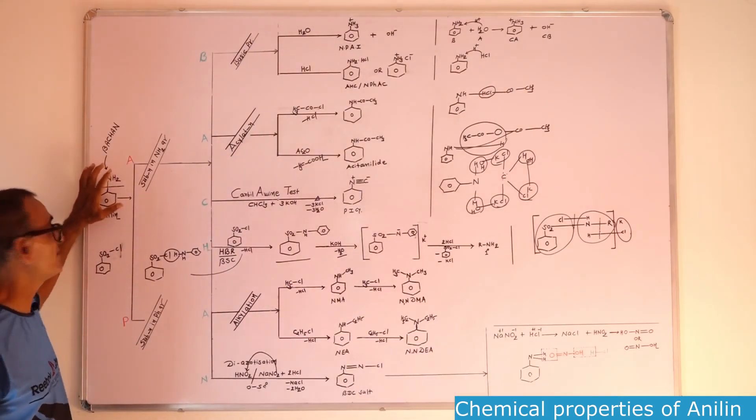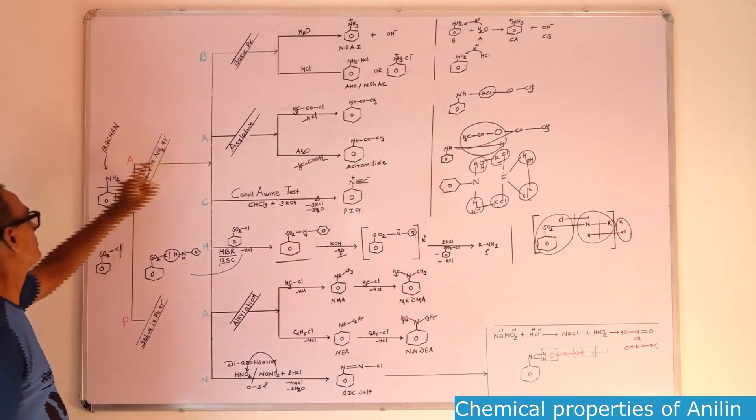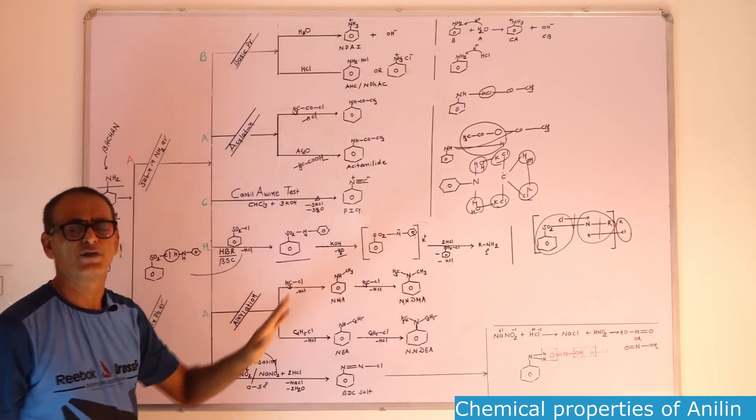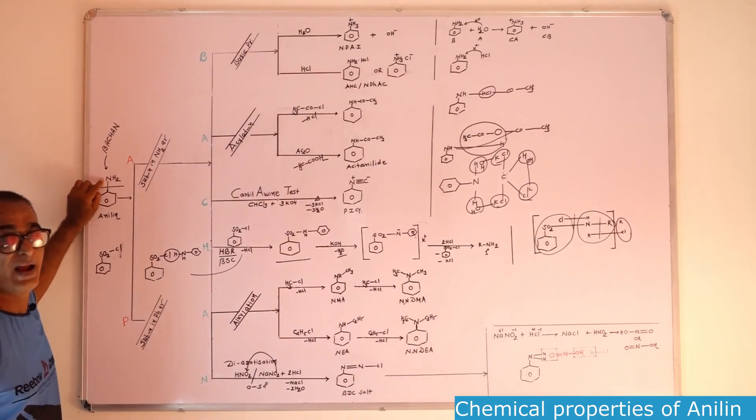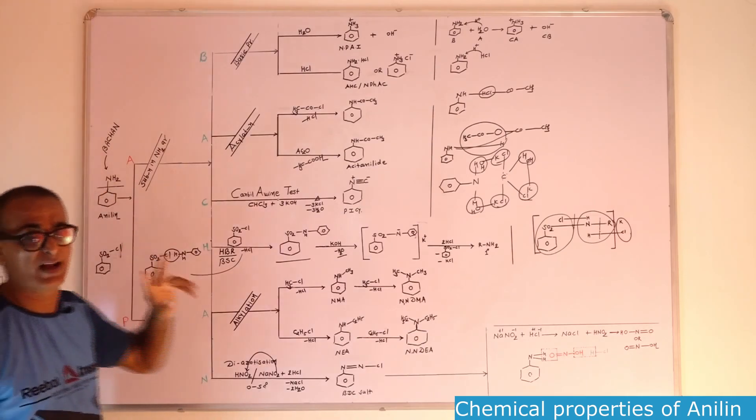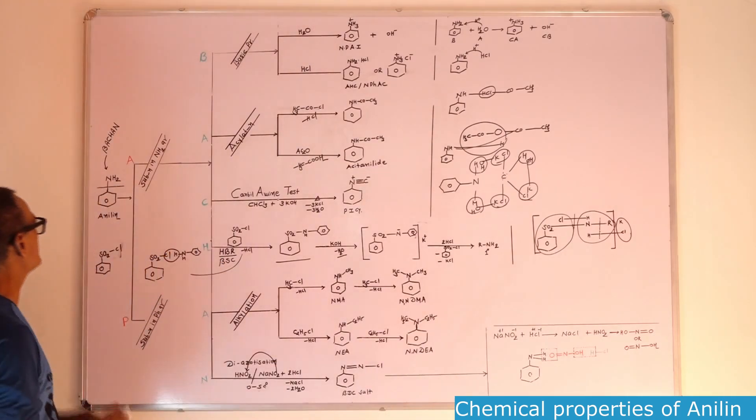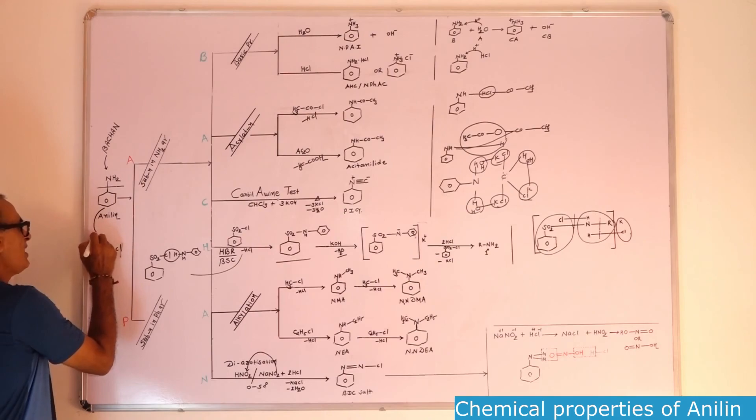In aniline reactions, aniline gives two types of reactions. First reaction during which substitution in NH2 group. In NH2 group change, this phenyl group will remain as this during these reactions. Phenyl group is like this, change only you can observe in this group. Aniline will also give some reactions during which hydrogen of phenyl group will substitute and NH2 group will remain as it is. So aniline gives two types of reactions. In one type of reaction, due to phenyl group.